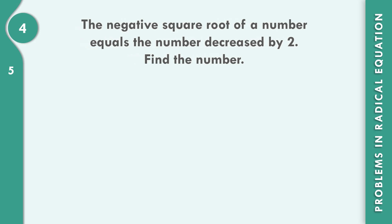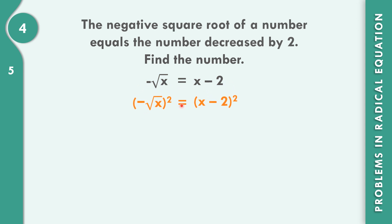In example number 4, the negative square root of a number equals the number decreased by 2. Find the number. So negative square root of x equals x minus 2. Let us solve now the number. Let us square both sides. Negative times negative is positive, so cancel the 2 and the radical sign — that becomes x. And this one on the right side is the square of a binomial.